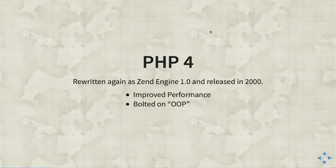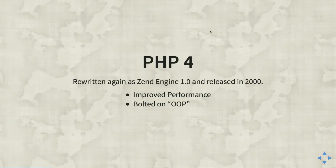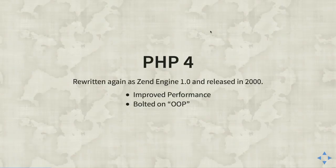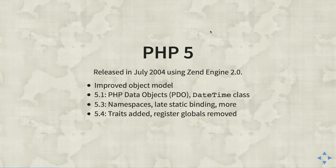PHP 4 was released in 2000. They bolted on some object-oriented programming paradigms — basically really ugly arrays with methods if you look inside the code. They also did a lot to improve performance between PHP 3 and 4. PHP 4 was driven by the first version of the Zend engine — Zend comes from combining letters of Zev and Andy's names. It's important to note PHP 4 was end of life in 2008, and PHP 7 deprecates some PHP 4 functions, so old code bases will need work.